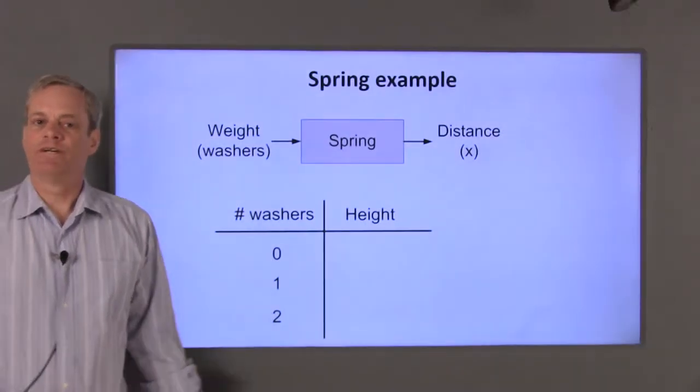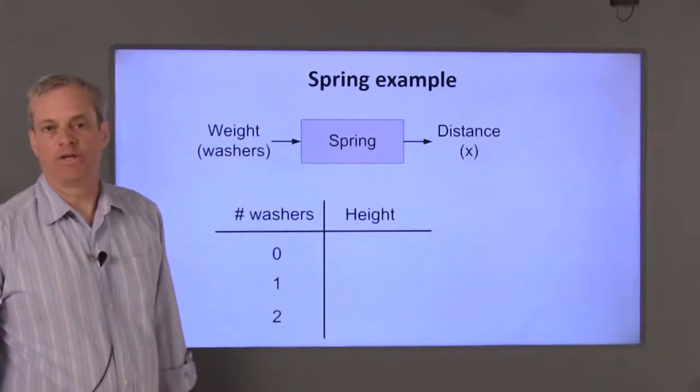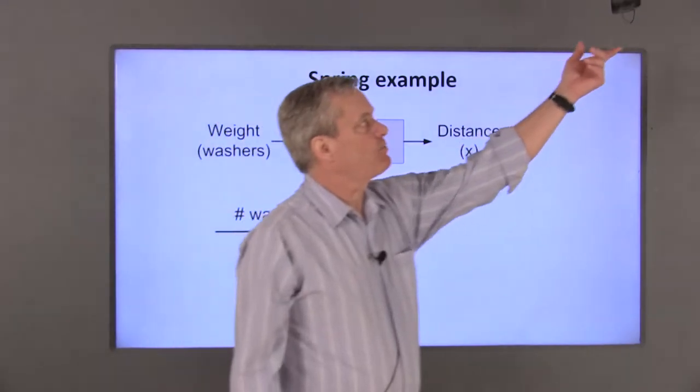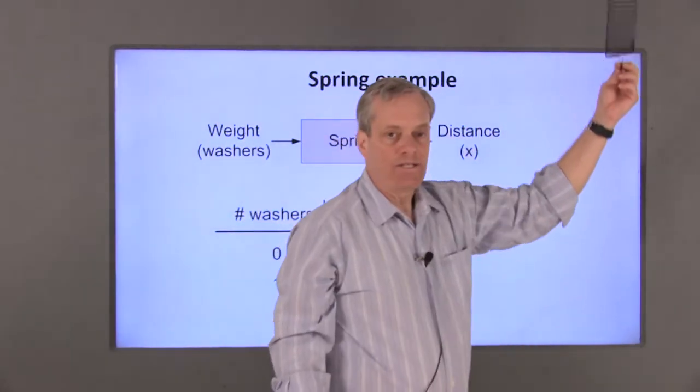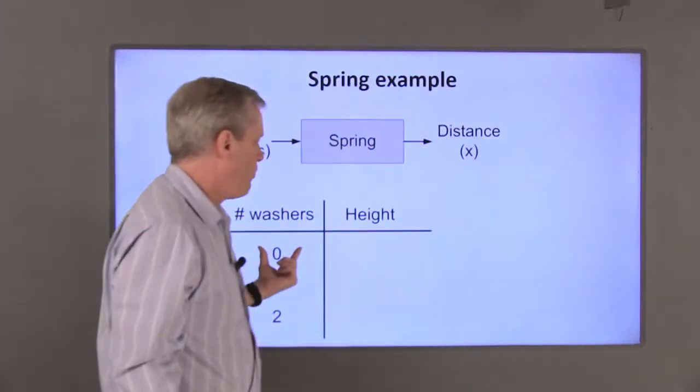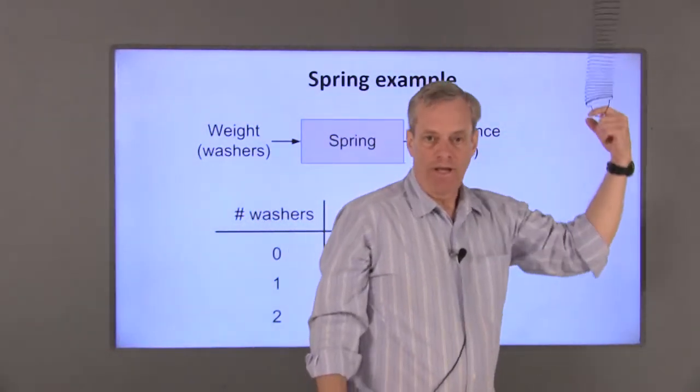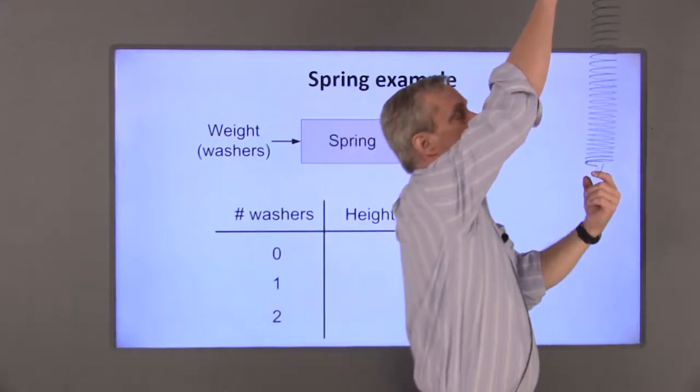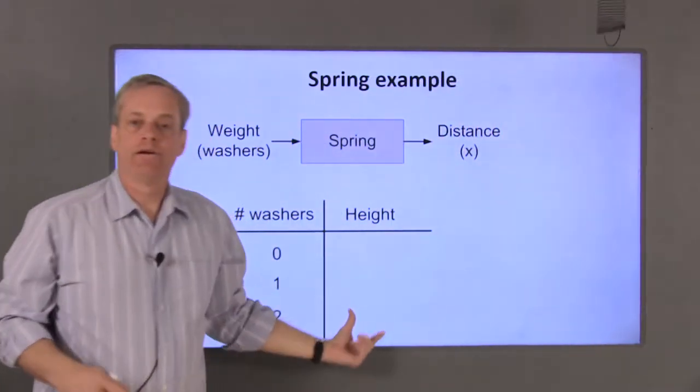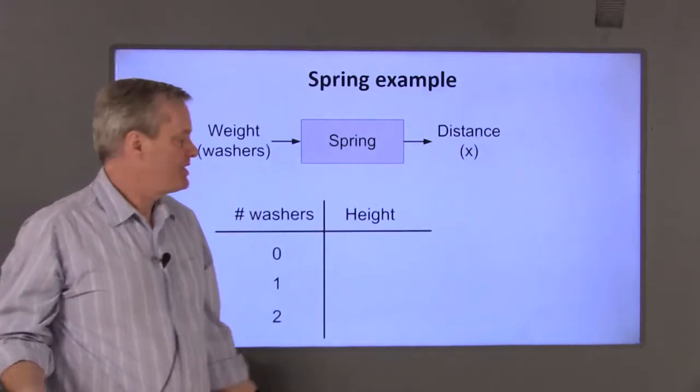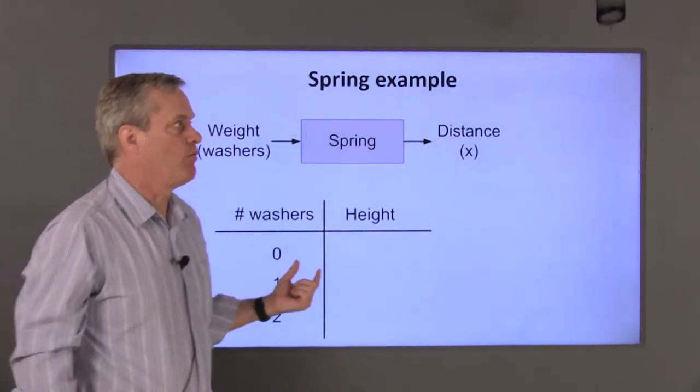As an example of this, I'll create a mathematical model for a spring. I've got a spring here attached to the ceiling. I'm going to add weight to the spring in the form of washers. That will stretch the spring. I'll measure the distance between the ceiling and the bottom of the spring, record that here, and come up with a mathematical relationship between that distance and the number of washers.